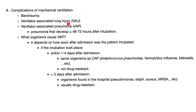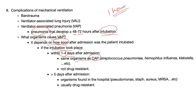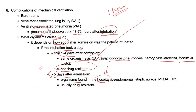Complications of mechanical ventilation: barotrauma, ventilator-associated lung injury, and ventilator-associated pneumonia (VAP) — a pneumonia that develops 48 to 72 hours after being intubated and mechanically ventilated. If pneumonia started within one hour after the ventilator, it is not ventilator-associated. The causative organisms depend on timing: if intubation occurred within 1–4 days after admission, organisms are similar to community-acquired pneumonia (Strep pneumo, Haemophilus influenzae, Klebsiella) and are usually not drug-resistant. After 5+ days, hospital organisms predominate (Pseudomonas, Staph aureus, MRSA), which are usually drug-resistant.